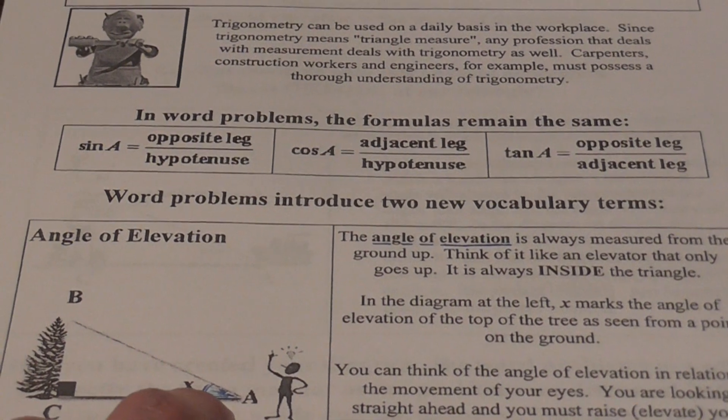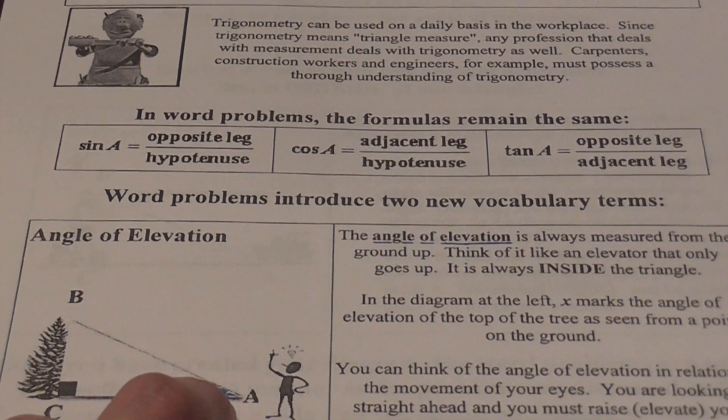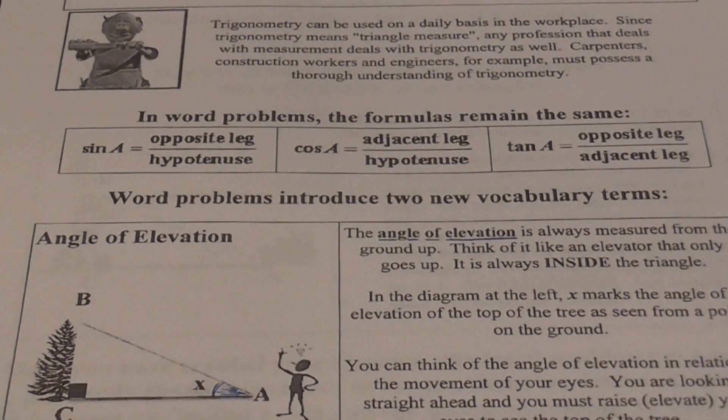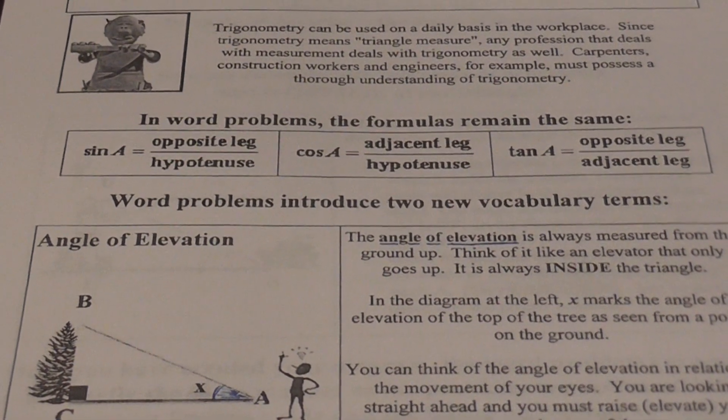So the angle of elevation is in relation to the movement of your eyes. You're looking straight ahead. Instead, you must rise or elevate your eyes to look at the top of the tree.